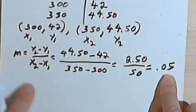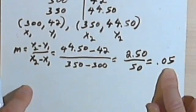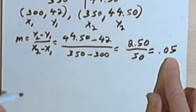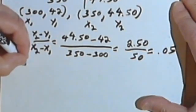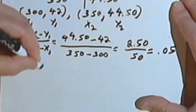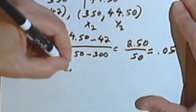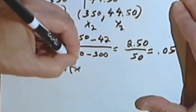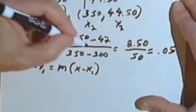Now, instead of using y equals mx plus b, let's try the point-slope form. So remember the point-slope form was y minus y sub 1 equals m, the slope, times x minus x sub 1.